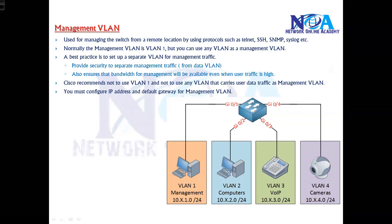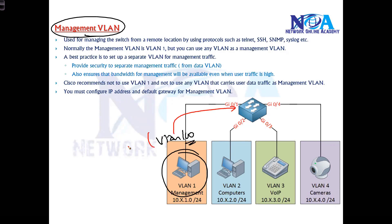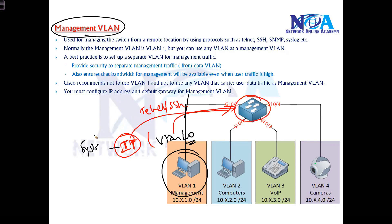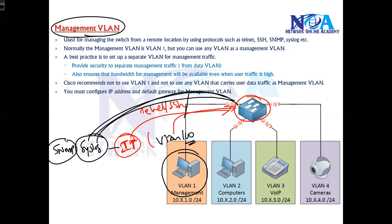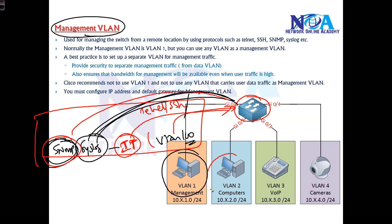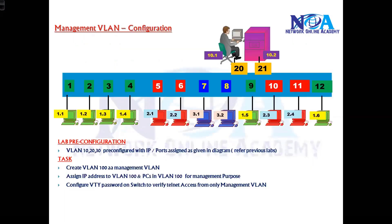We'll look at the configuration of management VLANs. A management VLAN is a separate VLAN — in this example I'll be using VLAN 100 — generally assigned for IT department users responsible for managing devices. From this VLAN you can telnet or SSH to devices, send log messages to syslog servers, and run SNMP monitoring servers. We keep this traffic separated from normal data traffic.